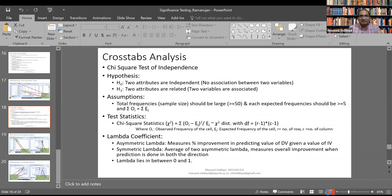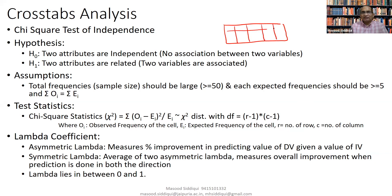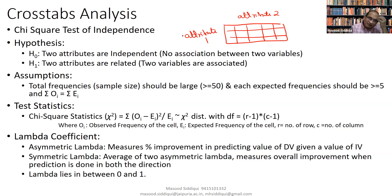This is cross-tab analysis. Cross-tab means cross-tabulation — we have rows as well as columns in a table. We have one variable or attribute on the row and a second attribute on the column. In this case, since we want to examine the relationship between familiarity and willingness category, we place familiarity on the row and willingness category on the column. This is known as cross-tabulation.